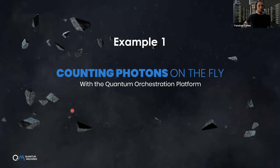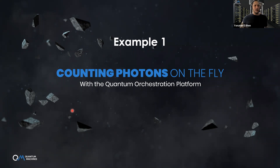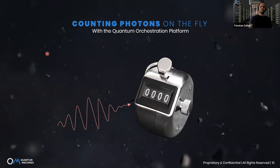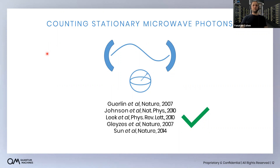The first example is counting photons — microwave photons on the fly — with the Quantum Orchestration Platform. This is work done at the group of Professor Benjamin Huard at the École Normale Supérieure de Lyon in France. This was the first demonstration of a photon counter for propagating microwave light. Detecting microwaves at the single-photon level is actually very hard — while in the optical regime single-photon detectors are used every day, microwave photons have energy about five orders of magnitude lower.